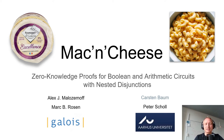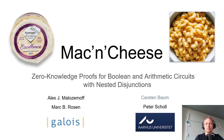My name is Karsten Baum and I will now present the Mac and Cheese zero-knowledge proof system for Boolean and arithmetic circuits with nested disjunctions. This is joint work with Alex Malosimov and Mark Rosen from Galoa and Peter Scholl from Aarhus University.